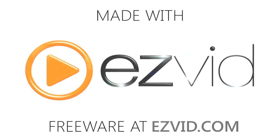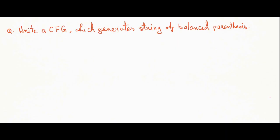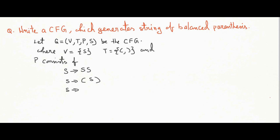Welcome to the next video on flat. In this video we are going to see certain CFGs. The first CFG generating string of balanced parenthesis. So G equals V, T, P, S be the CFG and P consists of following production. So these productions when combined will generate balanced parenthesis.